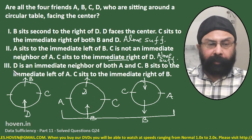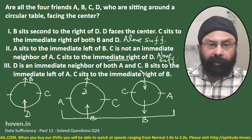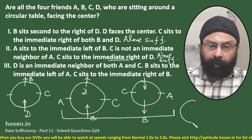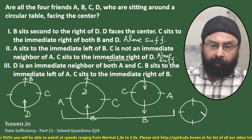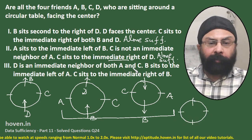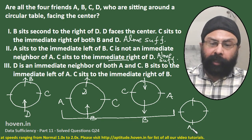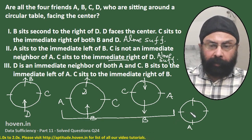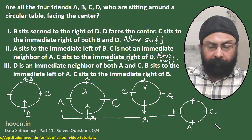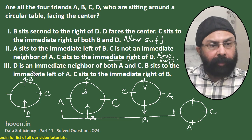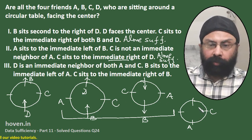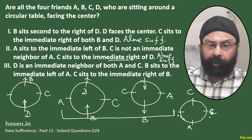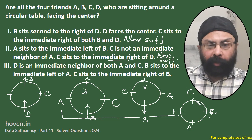Now let us take the third statement: D is an immediate neighbor of both A and C. Drawing a fresh table, if D is an immediate neighbor of both A and C, then C must be located opposite to A, and D will be either to the left or right, serving as the immediate neighbor of both A and C.